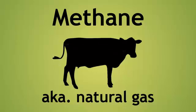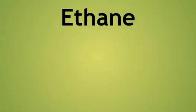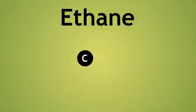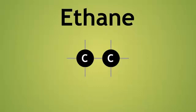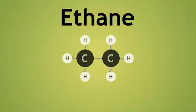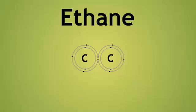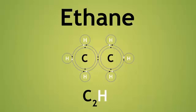The next molecule in the homologous series of alkanes is ethane with two carbon atoms. As you can see, a single covalent bond is formed between the two carbon atoms, with six more hydrogen atoms covalently bonded to complete the molecule.